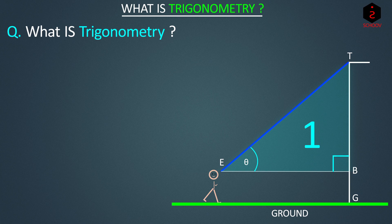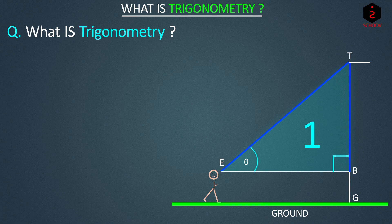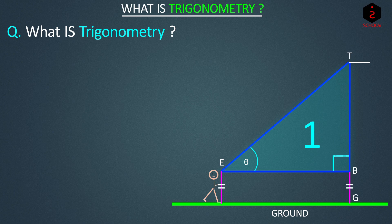Now I can find this vertical side DB if somehow I can find its relation to this horizontal line. And when we add it to BG, which is equal to my height, I get the height of the tower. This relation is studied in Trigonometry.